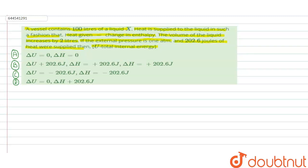The answer options are: first option, ΔU = 0 and ΔH = 0; second option, ΔU = -202.6 joules and ΔH = -202.6 joules; fourth option, ΔU = 0 and ΔH = +202.6 joules.